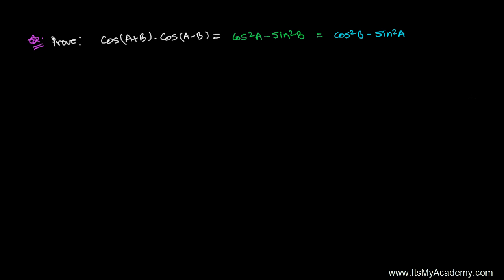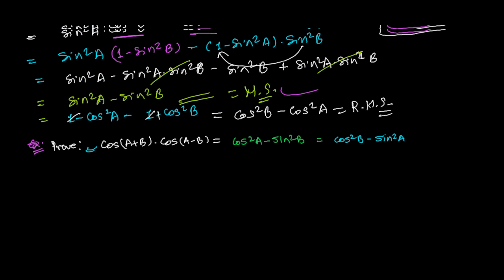Here we have another proofing question of trigonometry based on the concept of trigonometric ratios of the sum and difference of two angles. The question is: cos(A+B) times cos(A-B) equals cosine squared A minus cosine squared B, which is also equal to cosine squared B minus sine squared A.